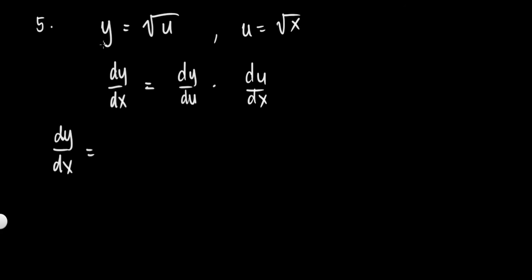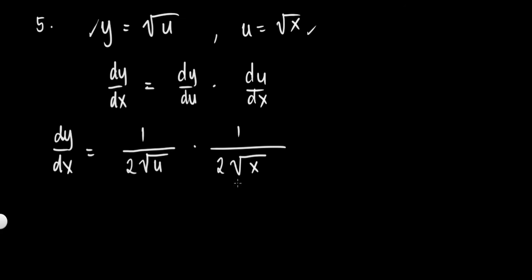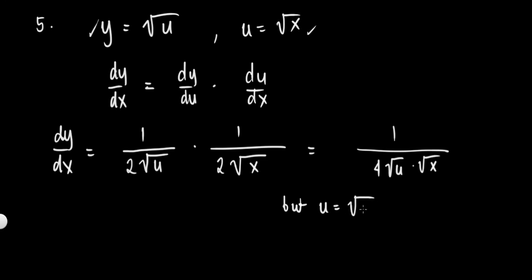dy over dx is equal to the derivative of y with respect to u, which is 1 over 2 times the square root of u. Multiplied by du over dx — what is the derivative of the square root of x? Apply the same rule: it is 1 over 2 times the square root of x. So we have 1 over 2 times 2, giving 4 in the denominator, times the square root of u times the square root of x.